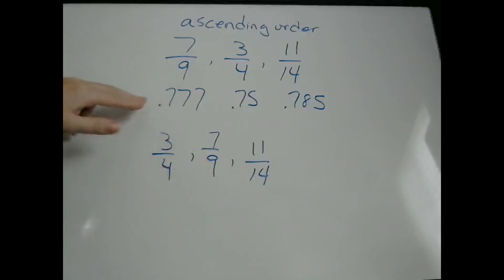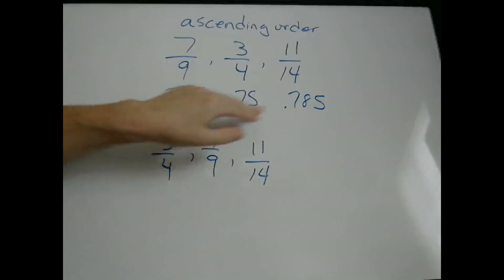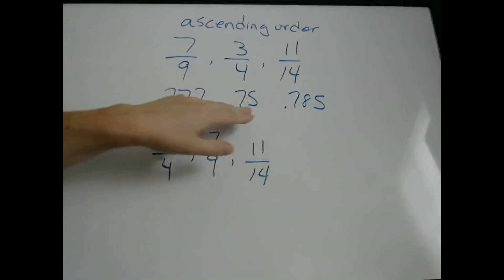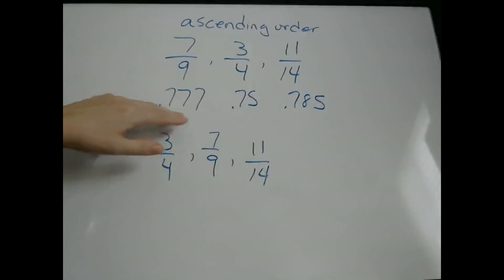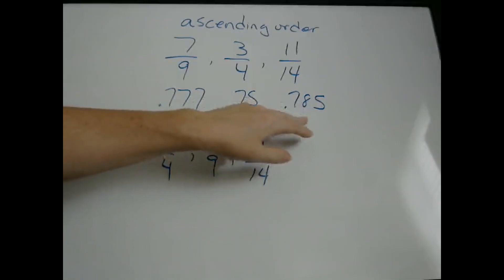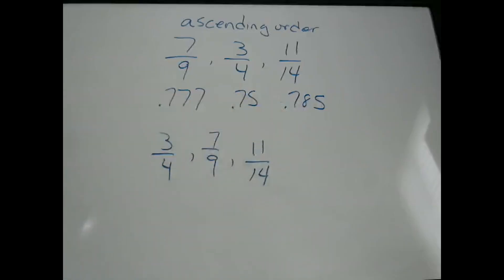So this is the answer putting these fractions in ascending order, and we did it by just doing the division and comparing the decimals. We can see that 3 fourths is the smallest number, then 7 ninths, then 11 fourteenths. That's one way to do it — probably the easiest way — but you need a calculator in order to do that quickly.